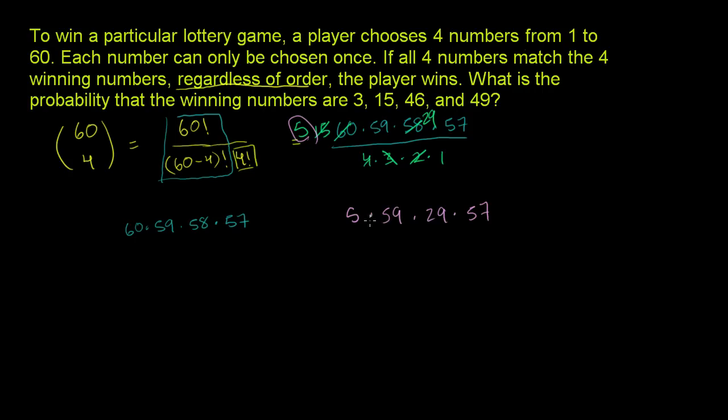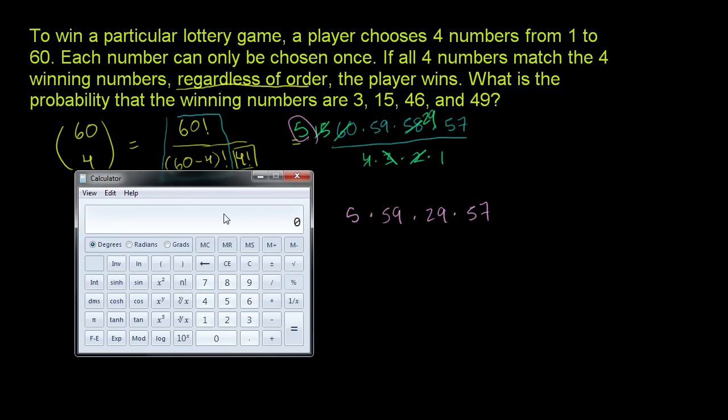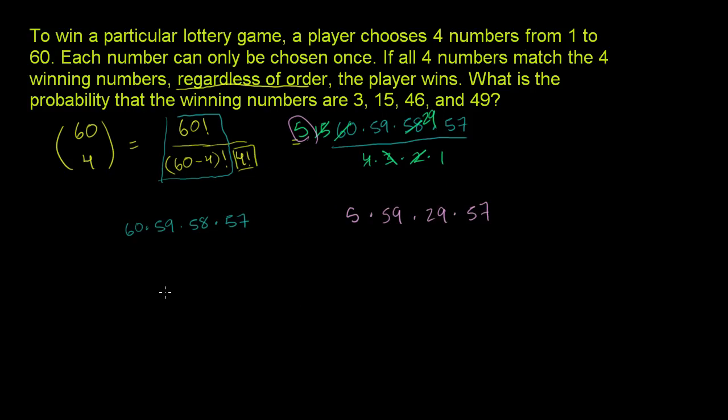This isn't going to be our answer. This is going to be the number of combinations we can get if we choose four numbers out of 60, and we don't care about order. So let's take the calculator out now. 5 times 59 times 29 times 57 equals 487,635 combinations. If you're picking four numbers, you're choosing four numbers out of 60, or 60 choose 4.